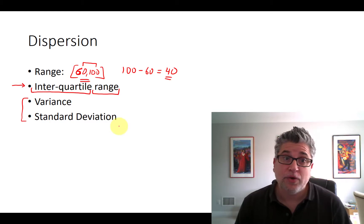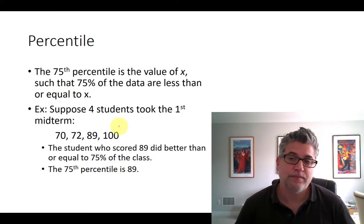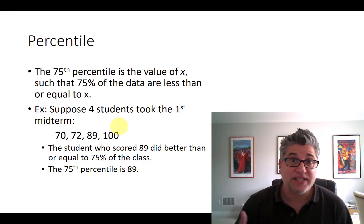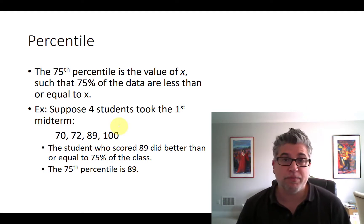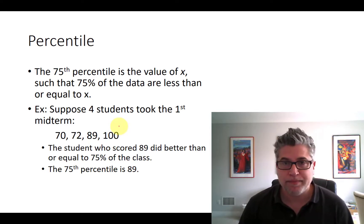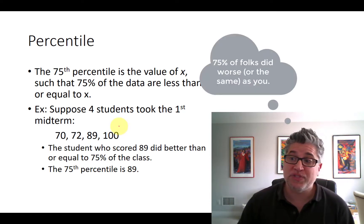To understand that, we need to actually take a step to the side and talk about percentiles first. So what's a percentile? Maybe it's easiest to start with an example. If somebody scores in the 75th percentile of a test, like on your SATs or ACTs, if you scored in the 75th percentile, that doesn't mean that you scored 75% on the SAT. It doesn't mean you got 75% of the questions right. It means that whatever your score was, 75% of folks did worse than you.